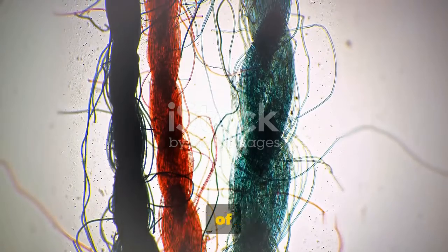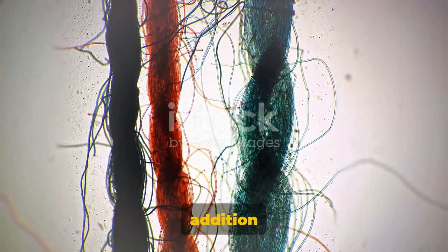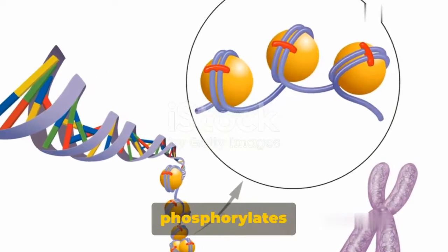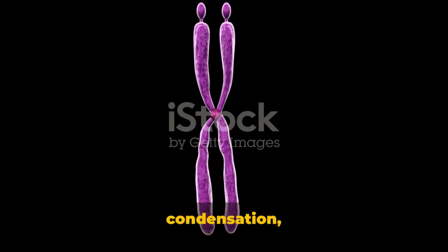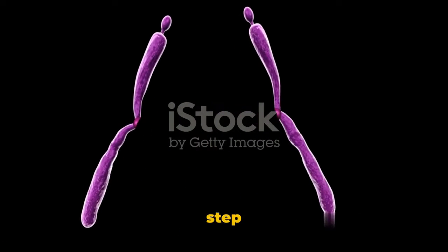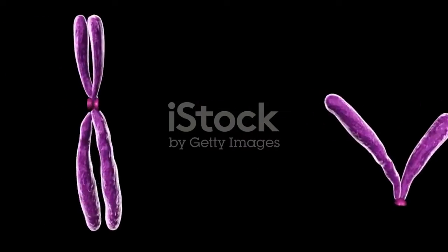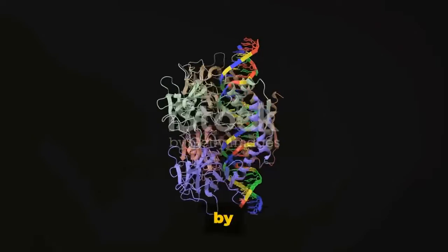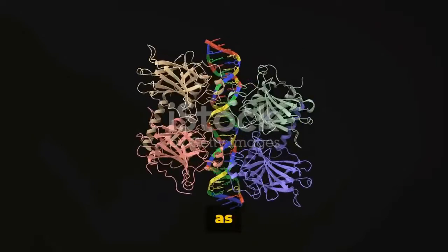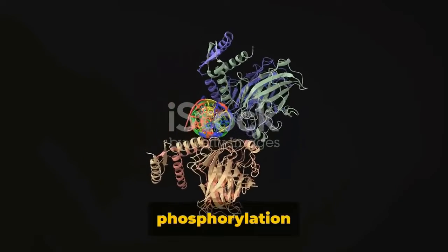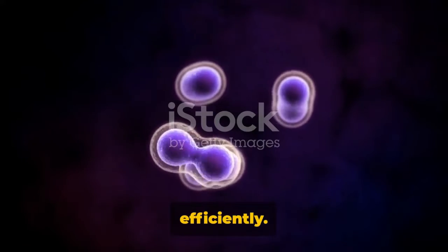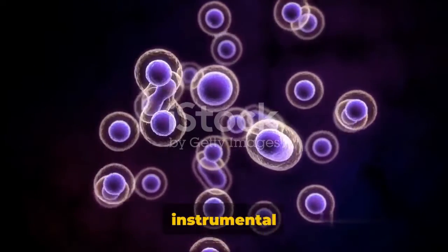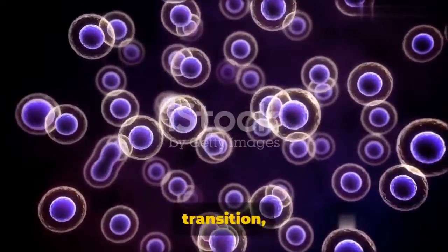This is due to the instability of microtubules caused by MPF. In addition, the MPF kinase phosphorylates several substances like histone H1. This action promotes chromosome condensation, another key step in preparing the cell for division. The activity of MPF is further regulated by other components, such as P34. The phosphorylation of P34 helps to control the activity of MPF, ensuring that the cell cycle progresses smoothly and efficiently.